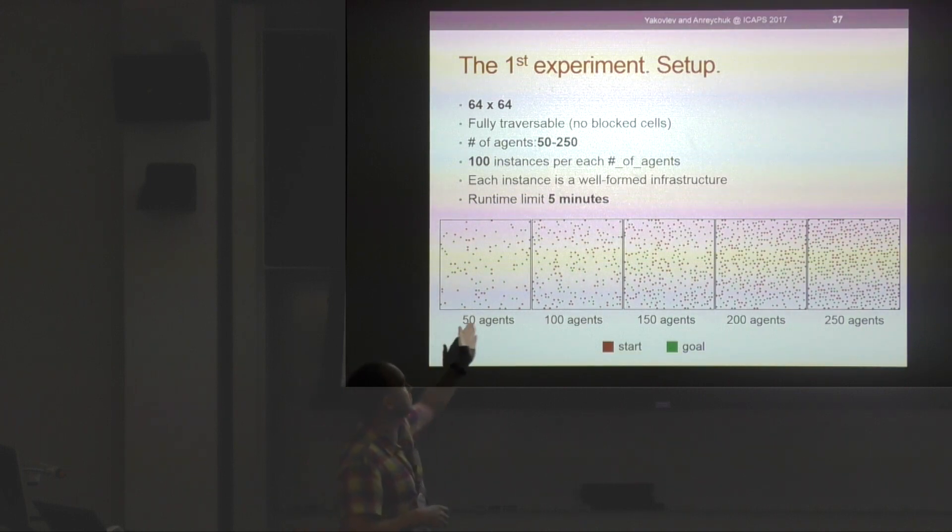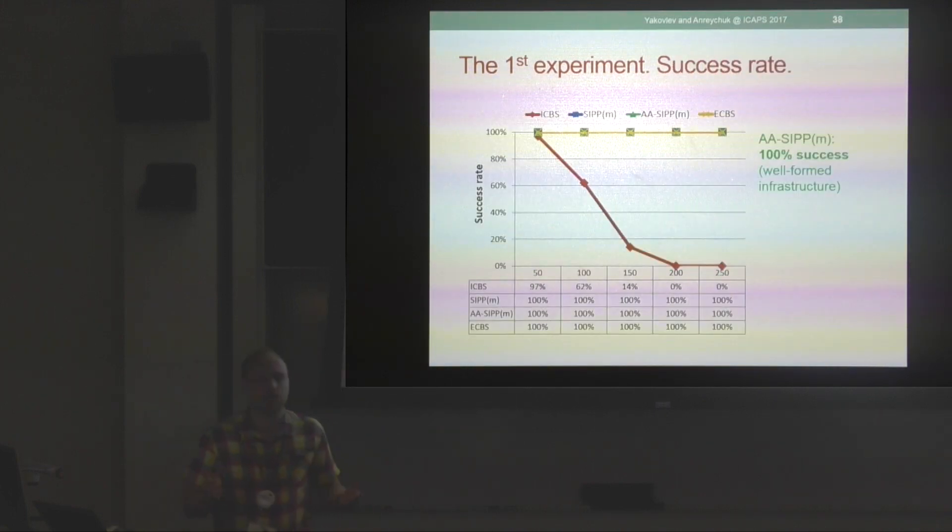In the first experiment, we were looking at empty grids size 64 by 64. Number of agents ranged from 50 to 250. We generated 100 instances for each number of agents, and each instance was generated in such a way for it to be a well-formed infrastructure. Runtime limit was set to be five minutes.